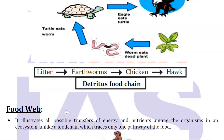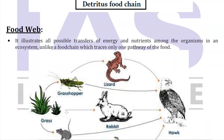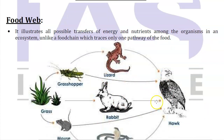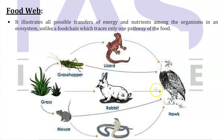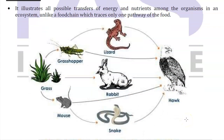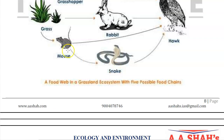Then we come to the second term: food web. A food web is a complex system of all different food chains, because food chains in real life do not exist in a linear manner - all food chains get intermingled. For example, a hawk may eat a grasshopper, a lizard, or a rabbit. A snake may eat the mouse, the mouse may be eaten directly by the hawk, and the snake may also be eaten by the hawk. All these interactions together form a food web. This is a food web in a grassland ecosystem.